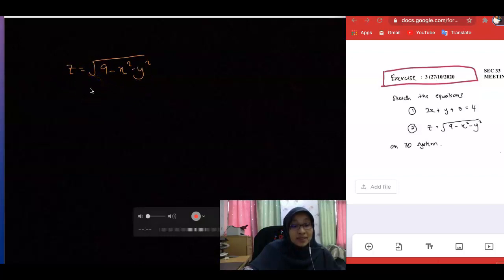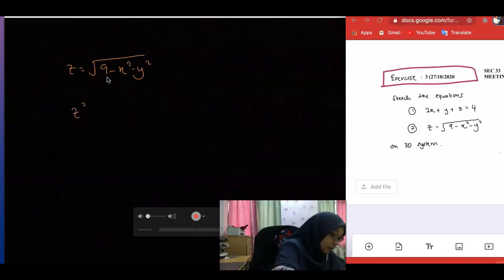But when you plot the zx plane and the zy plane, it is incorrect. That is because your z is only positive. Remember I told you, you have to be careful with the original expression given to you. Sometimes they give you this form and sometimes they will give you this form.